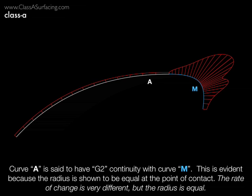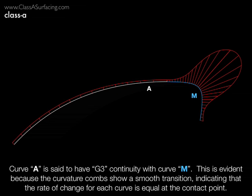The longer combs on the M curve here show that the radius is tighter than in the previous example, and that it varies over the length of the curve, but the fact that the radius is the same at the point where they meet makes them curvature continuous. And here, finally, we're showing a full G3 continuous curve, as evidenced by the smooth curvature combs. The graph is showing us that not only are the curves tangent and their radii equal at the contact point, but that the radius is increasing at the same rate when the two curves contact each other.